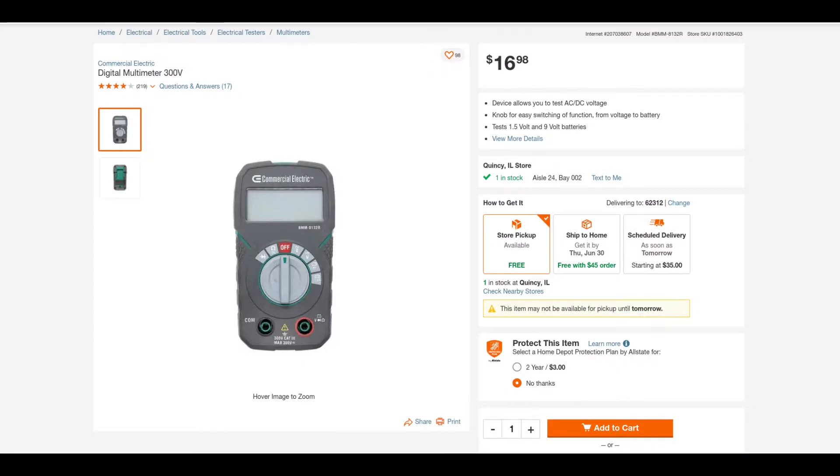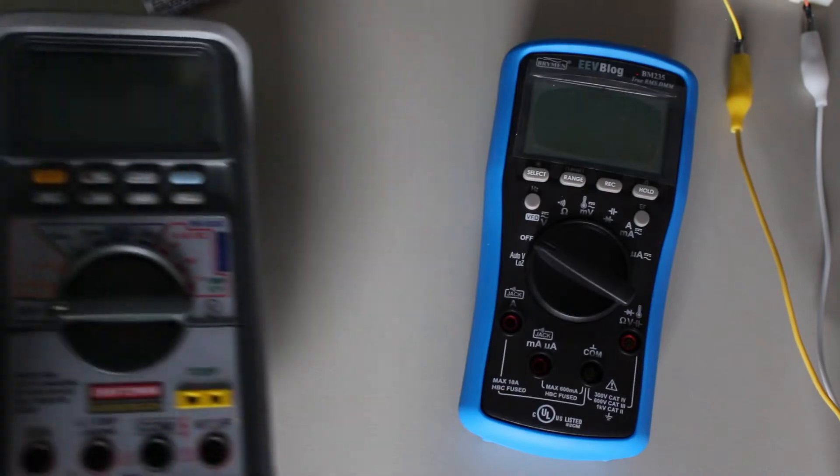And finally, I have this pocket multimeter, which costs me about $17 at Home Depot. So in other words, we have two cheap multimeters and two more expensive ones.